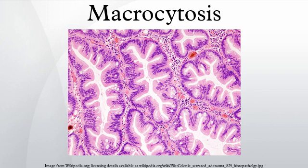Macrocytosis is the enlargement of red blood cells with near constant hemoglobin concentration, and is defined by a mean corpuscular volume of greater than 100 femtoliters. The enlarged erythrocytes are called macrocytes or megalocytes.